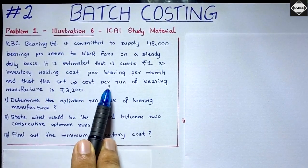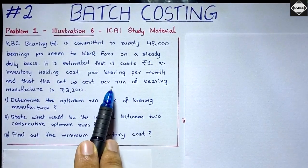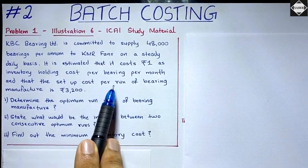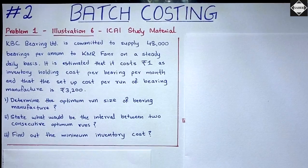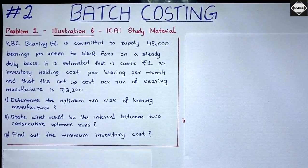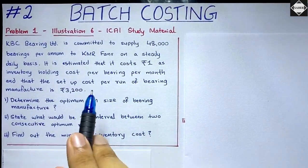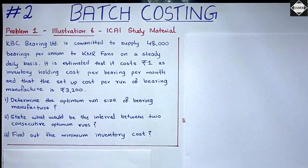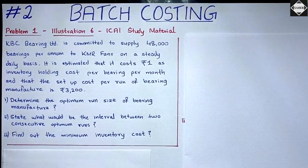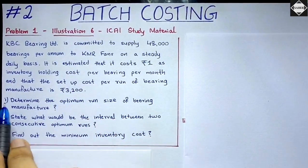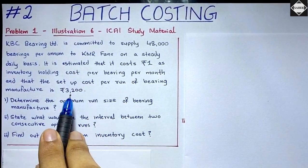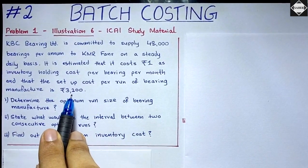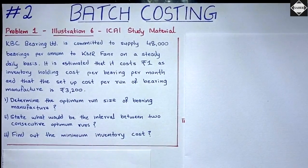Per run means per batch — each time the machinery is run and the batch is processed, that's called a run. So the cost per batch of bearing manufacture is ₹3,200. The setup cost S is given directly.